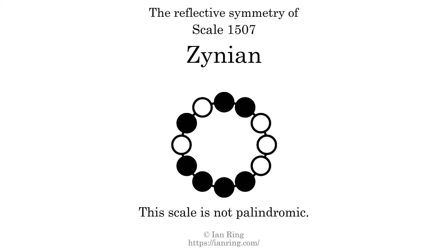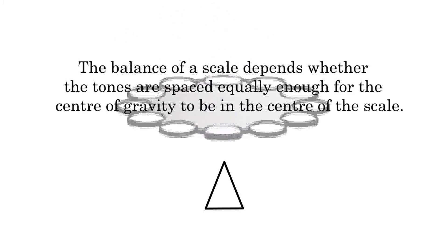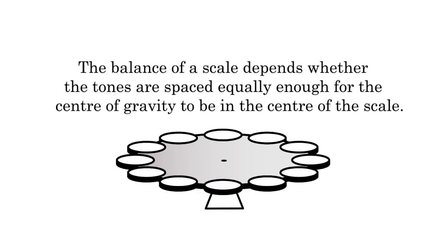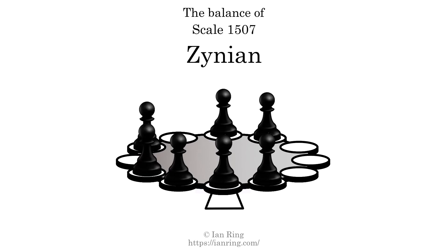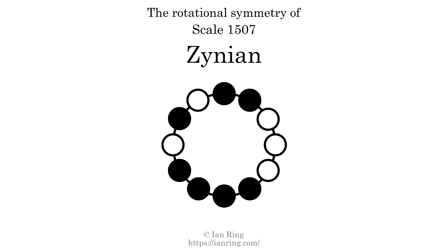This scale has no reflective symmetry. This scale has a different pattern of intervals ascending and descending, so it is not palindromic. This scale has no ridge tones. The balance of a scale depends on whether the tones are spaced equally enough for the center of gravity to be in the center of the scale. This scale is not balanced. The inverse of a scale is a mirror image — it is what you get when the sequence of intervals is reversed. The inverse of this scale is scale 2293, also known as Gorian. This scale is chiral; it cannot transform into its inverse by rotational transformation. This scale has no rotational symmetry.